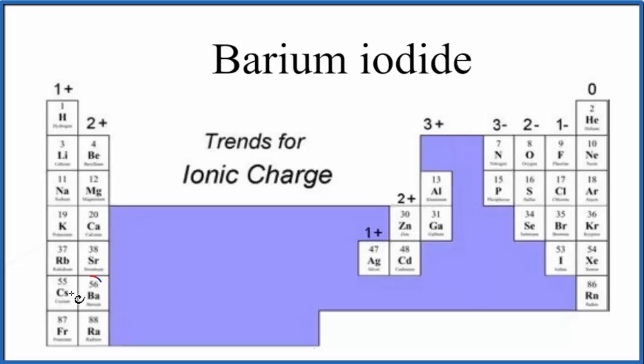We can see barium right here. It's in group 2, so it has a 2 plus ionic charge. And then iodine right here, the iodide ion, is going to be a 1 minus.